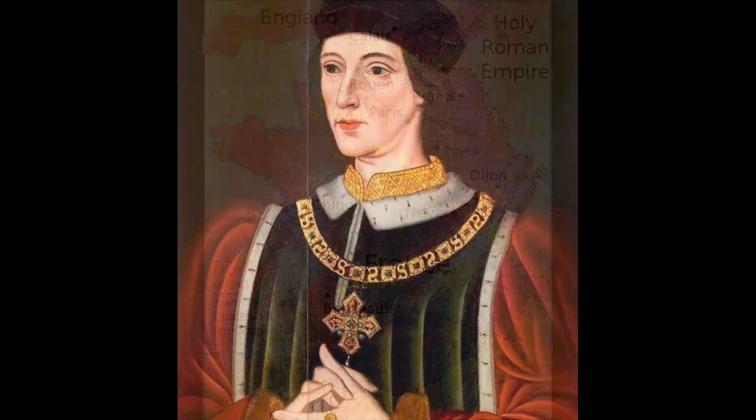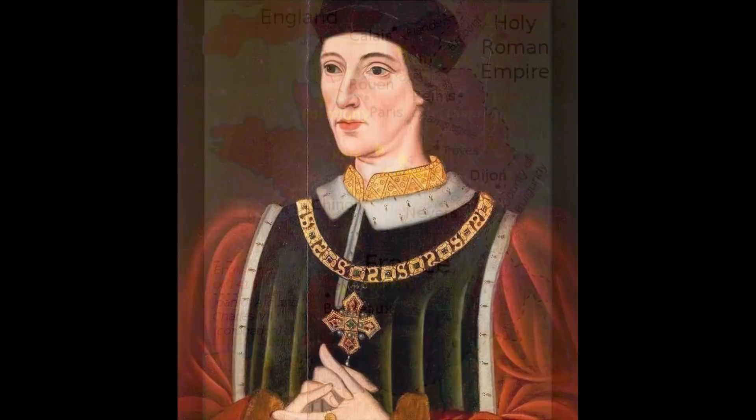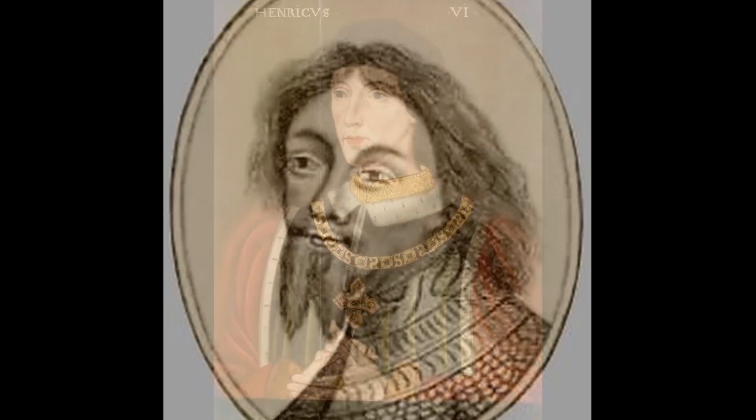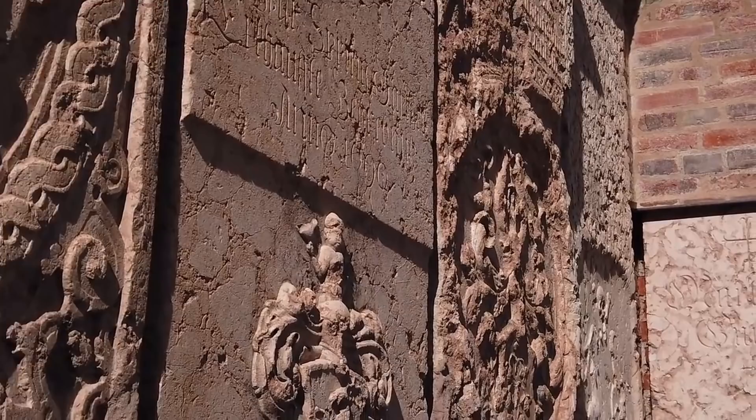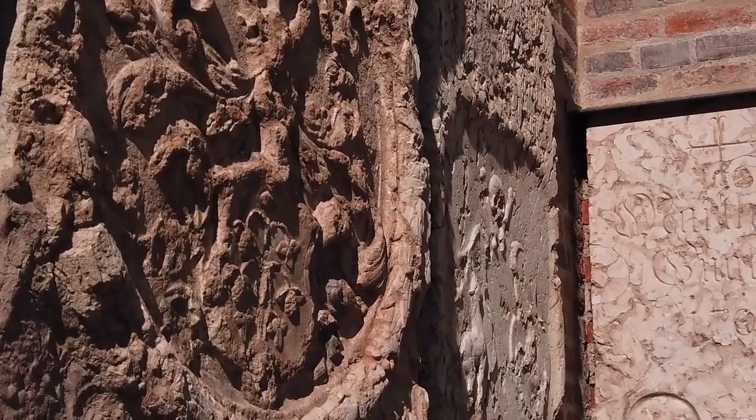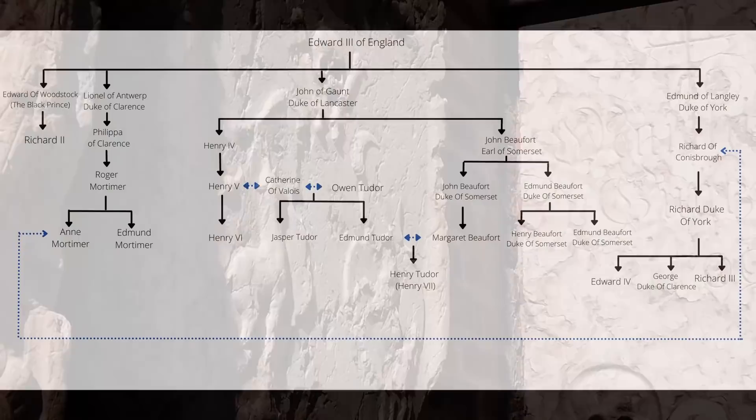After the loss of the French territories, and with the perception that government and justice in England was being corrupted by Henry VI's favorites, much opposition began to arise in regards to the weak king. At the forefront of the opposition was Edward's father, who after 1447 was the closest living relative to Henry VI. The stage was being set for one of the worst civil conflicts England had ever seen, and although Edward was only a boy at the time, he would play a major role in these conflicts in the years to come.